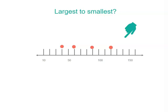So let's have a look at our numbers. 120 comes first, then 90, then 60, and then 40. That's in order from largest to smallest.